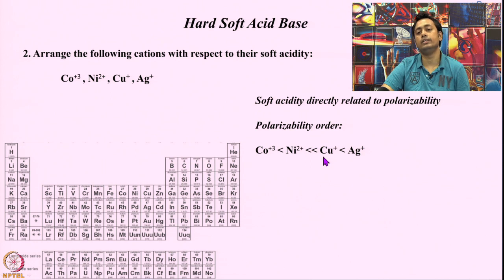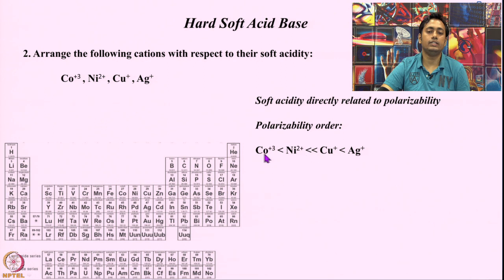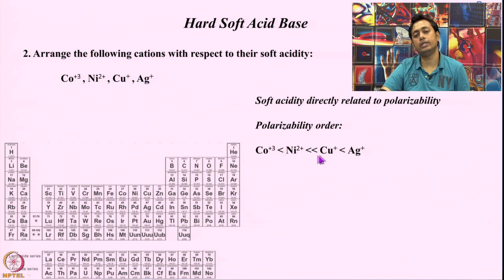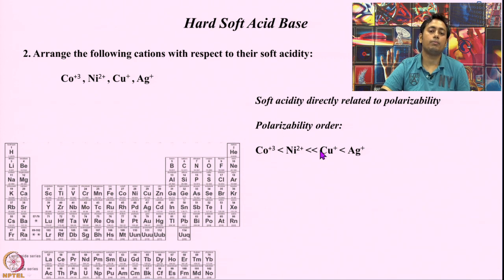The d electron density among these first-row transition elements means Co³⁺ has the smallest volume, then Ni²⁺ is larger, and Cu⁺ is the largest among the first-row elements. So cobalt not only has the higher charge but also the lower volume — obviously Co³⁺ has the highest charge density, then Ni²⁺, then Cu⁺. That gives us the polarizability order: Co³⁺ is the least polarizable, then Ni²⁺, then Cu⁺ is the most polarizable.